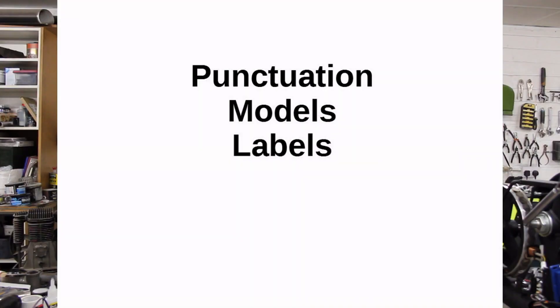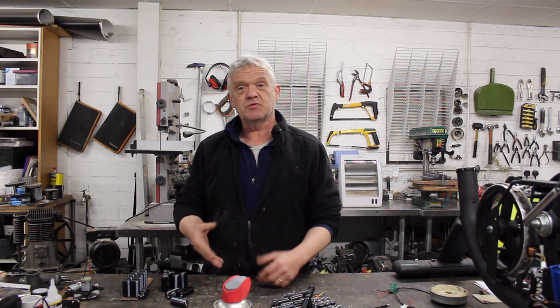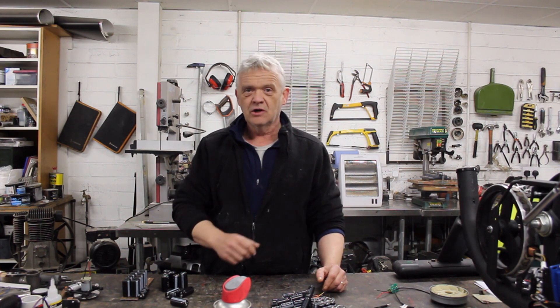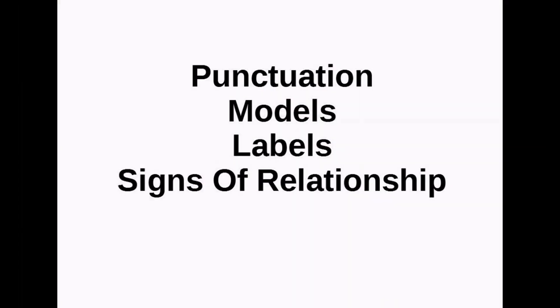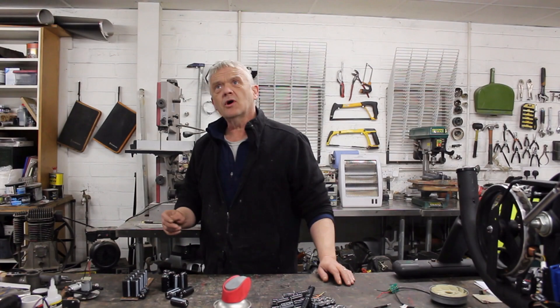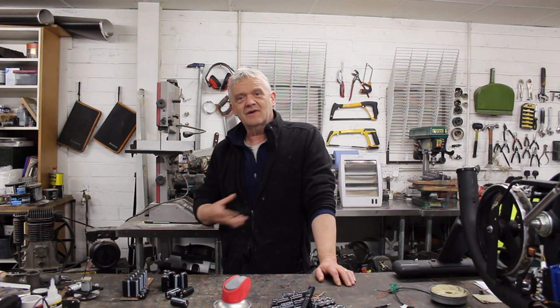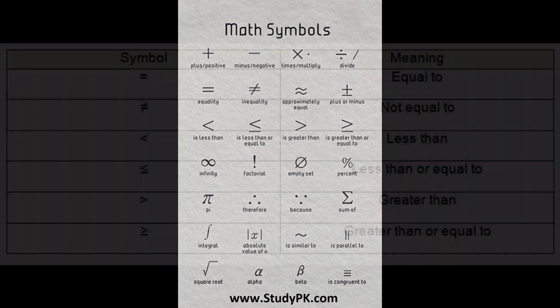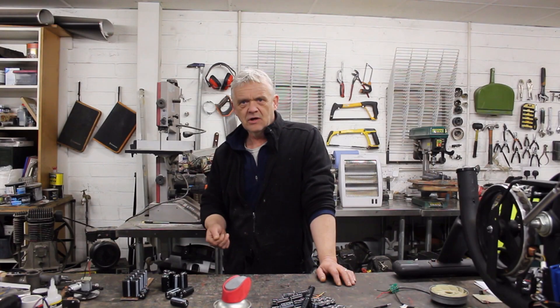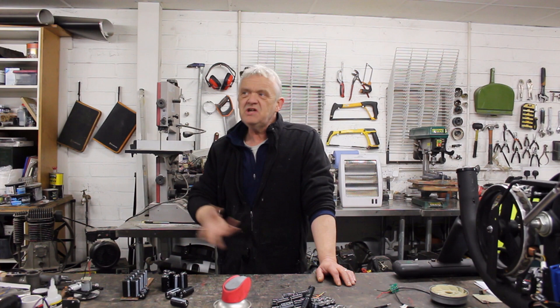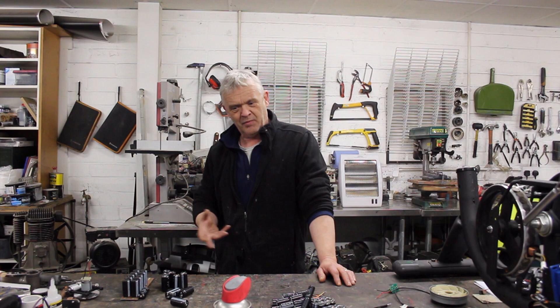When we talk about labels, we're talking about the nouns of maths — numbers. The labels can be specific, like 3, 5, 8, 7, 23, 26, or they can be general, like X, N, C. Labels hold something that we're going to perform operations on. When we talk about relationships, the common ones are equals, and the less familiar one might be 'identical to' — three straight lines in a row — which is called an identity. There's also approximately, which is a line with a squiggly line above it. Then we have less than, greater than, less than or equal to, greater than or equal to, and so on.